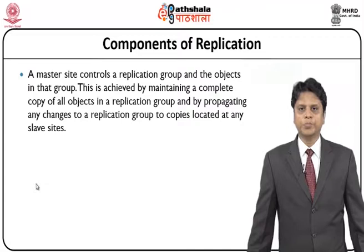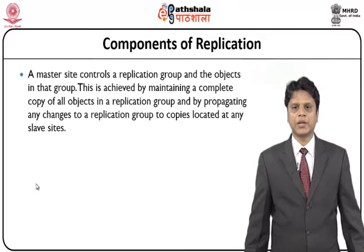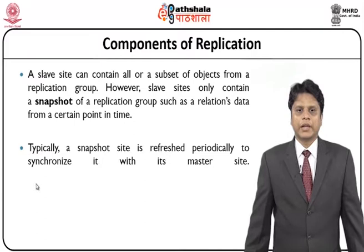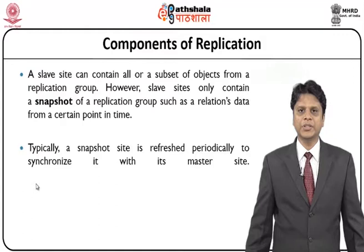A master site controls a replication group and the objects in that specific group. This can be achieved by maintaining a complete copy of all objects in the replication group and by propagating any changes to the replication group to copies located at any number of slave sites. A slave site can contain all or a subset of objects — it is not mandatory that the slave site contain all the information available at the master site.